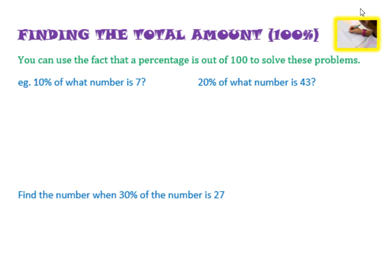So let's see. For example, 10% of what number is 7? First of all, I would suggest you use the fact that a percentage is out of 100. So 10% as a fraction would be 10 over 100. Of what number is 7? So 10 over 100, therefore, is the same as 7 over what mystery number? And that mystery number in the box is going to be our answer.